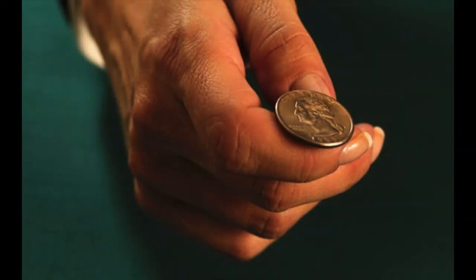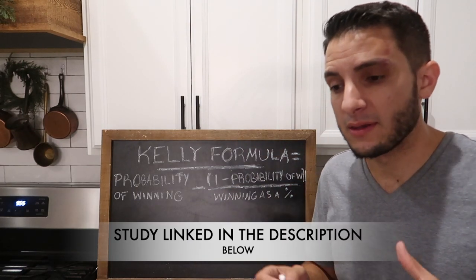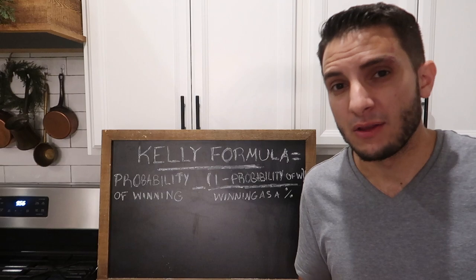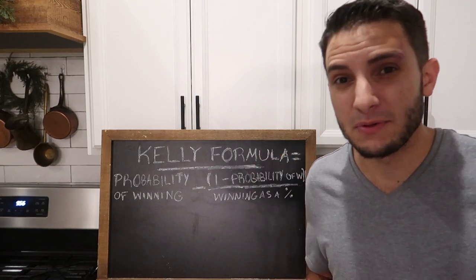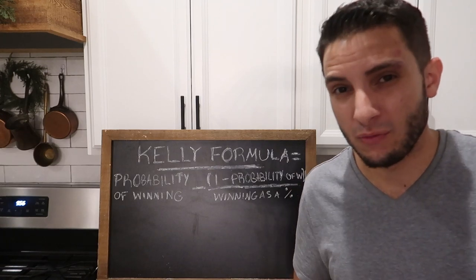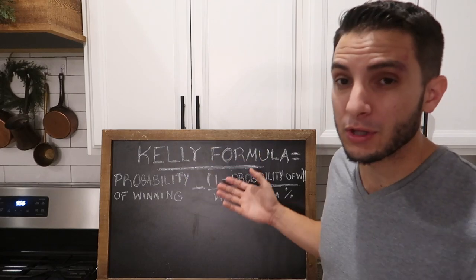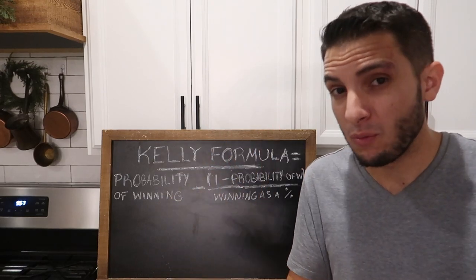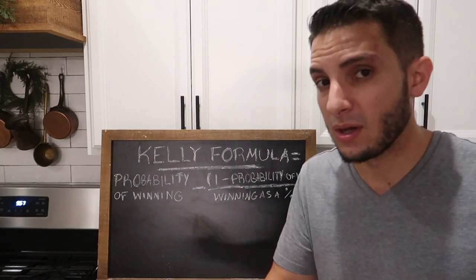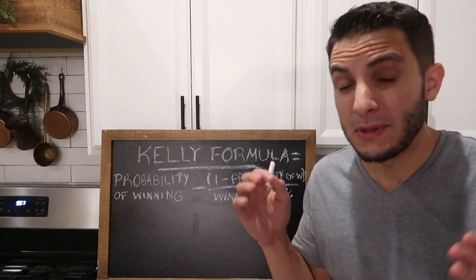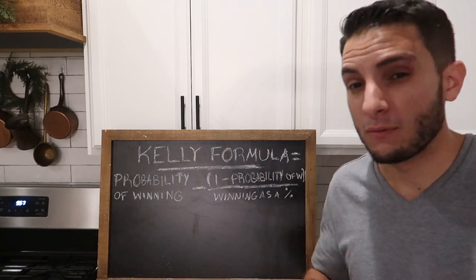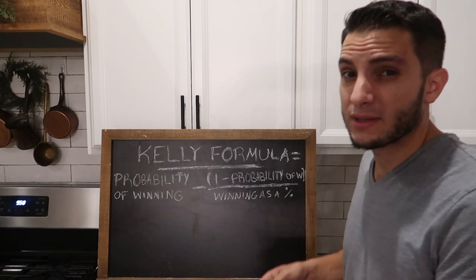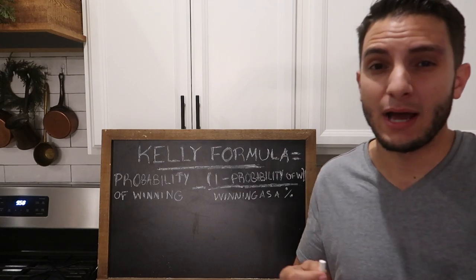There was a study done with a couple hundred college-educated people. They were given a simulated coin flip that lands 60% of the time on heads and 40% on tails. They were all given $25 and the opportunity to make $250 max. With 60% odds, everyone should have won $250 using the Kelly criterion. But what actually happened was 33% of people went bust — even though 60% of the time the coin landed on heads. Roughly 25% of people did win $250, but the majority underperformed and only won an average of $75. If they all used the Kelly formula, they all would have won $250.